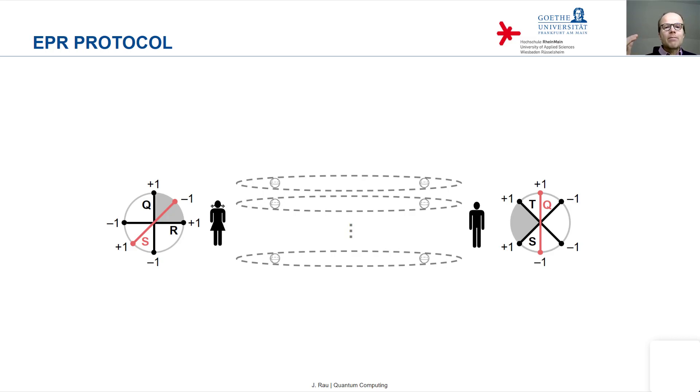So for some Bell pairs, Alice and Bob will have measured the same observables. And for others, they will have measured different observables.